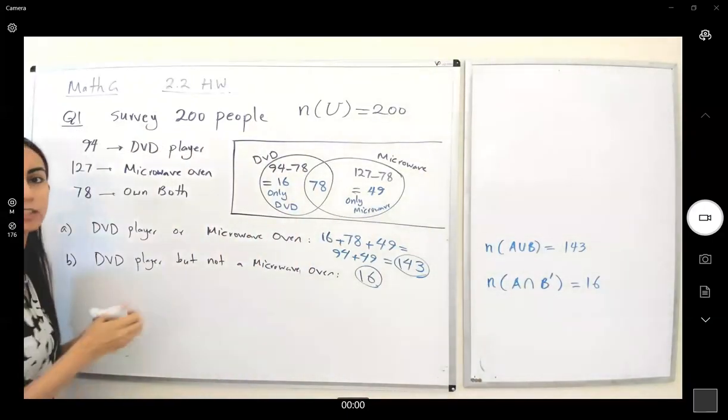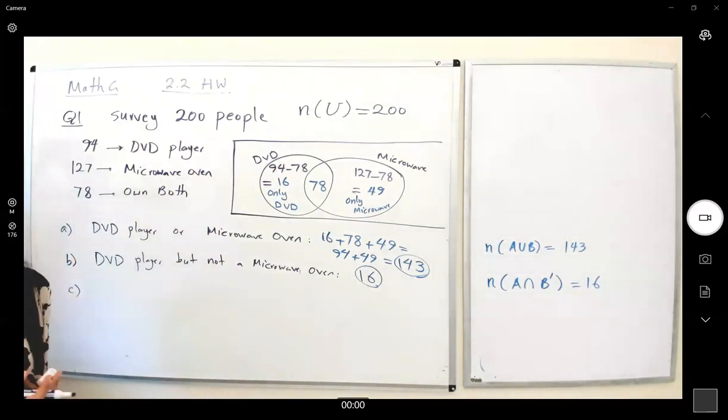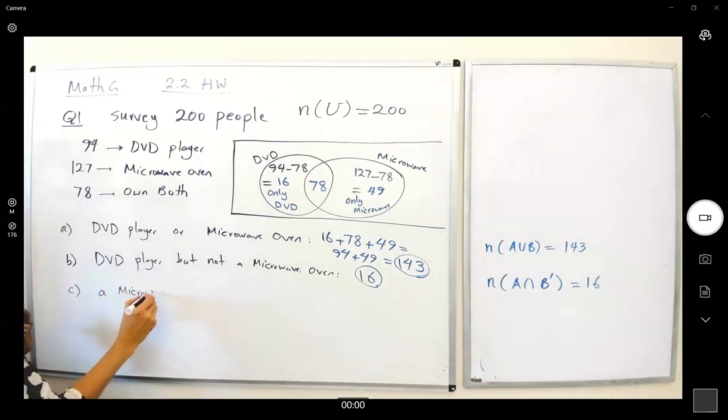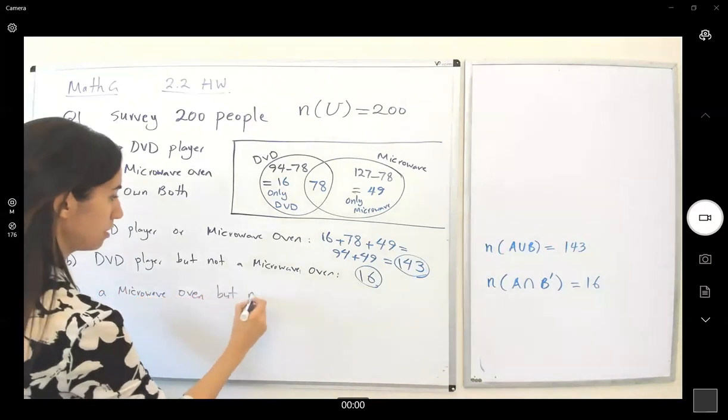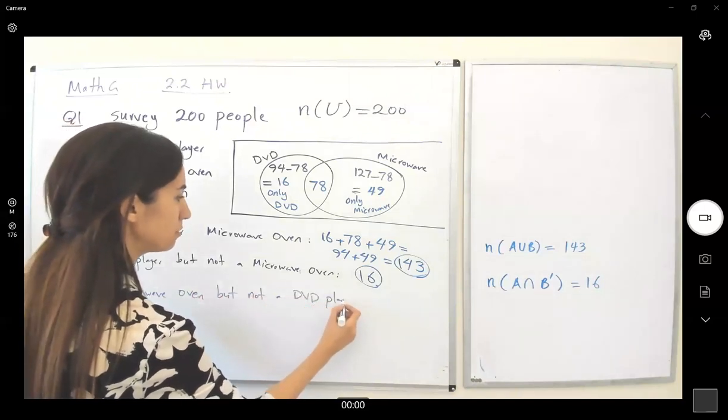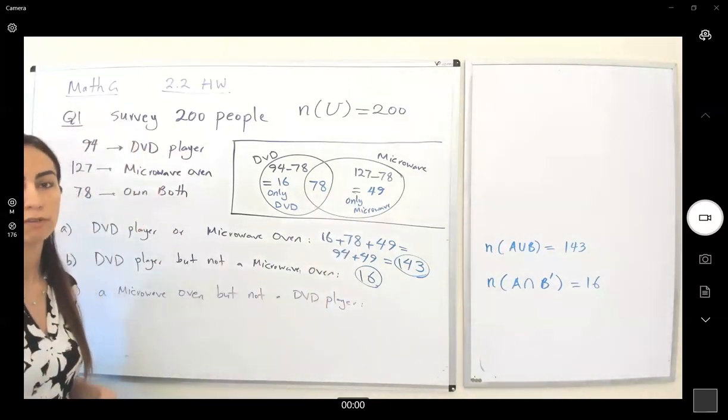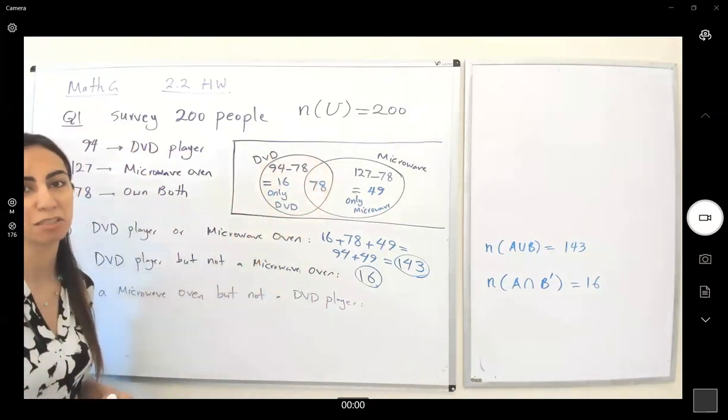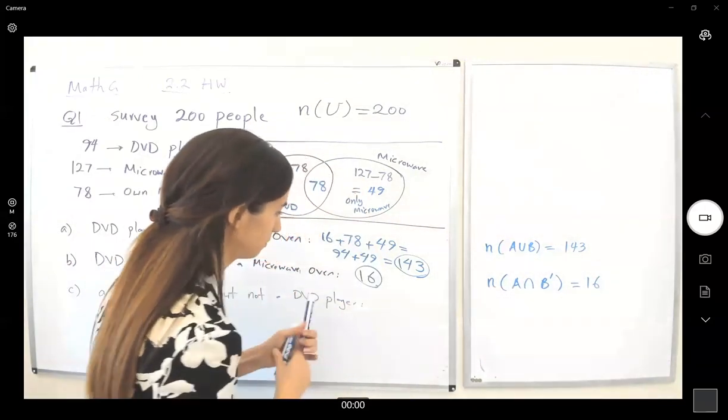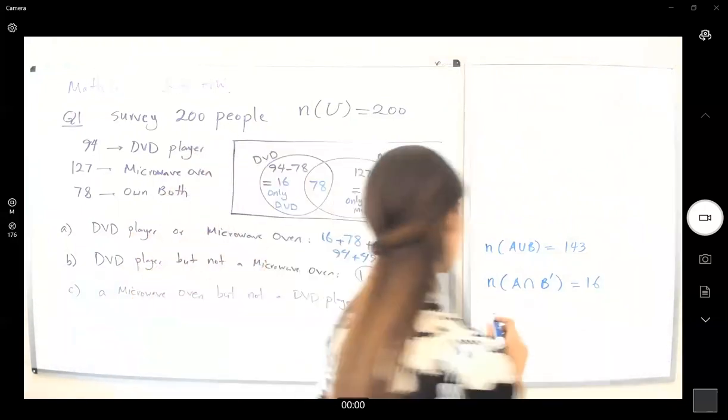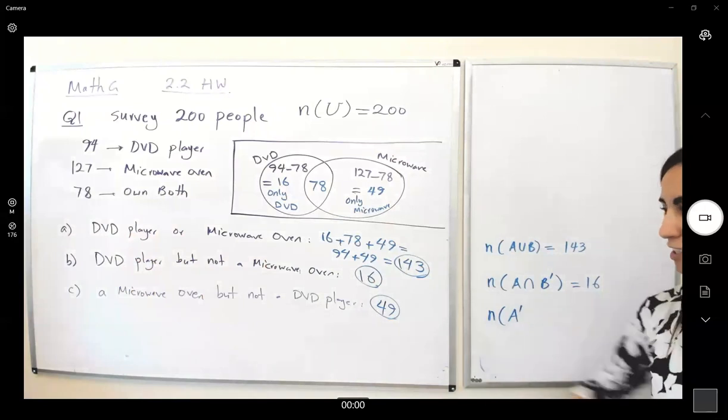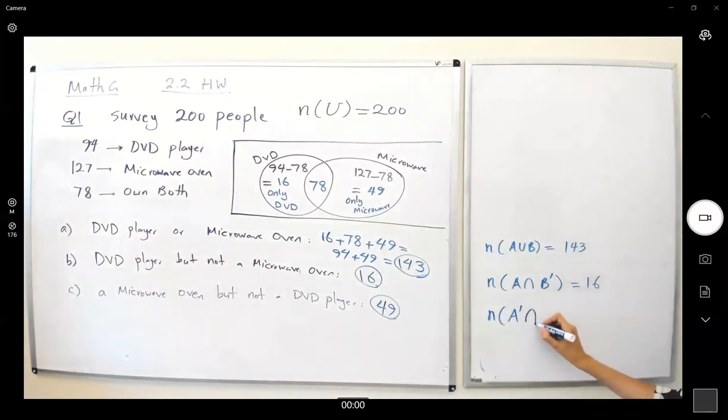And C, C is going to be the opposite of B. C says, what's the number of people who own a microwave oven but not a DVD player? Microwave oven but not a DVD player. Let's take a look at our Venn diagram again. Only microwave owners, not any DVD player. So it's going to be just 49. How do we translate that? It is n of A prime, not a DVD owner, and they only have microwave oven, which is 49.